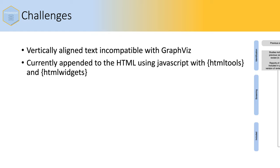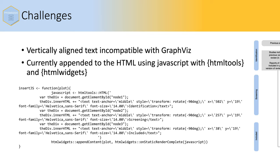One of the challenges is that the vertically aligned text in the blue boxes is incompatible with GraphViz. So what we needed to do was append that into the HTML using JavaScript, using the HTMLtools and HTMLwidgets packages, which adds text rotated through 90 degrees. The JavaScript is embedded into the HTML after it's been produced.